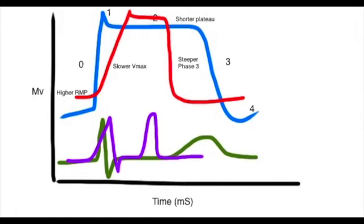Let's summarize the effect of hyperkalemia on the action potential by looking at this diagram. The red line is the action potential. We're going to have a higher resting membrane potential and smaller difference between RMP and threshold. There'll be a slower Vmax leading to longer depolarization in phase 0, a shorter plateau phase 2, and a steeper phase 3 repolarization. On the ECG — the purple line — that leads to broader QRS, shorter QT, and tall narrow T waves.